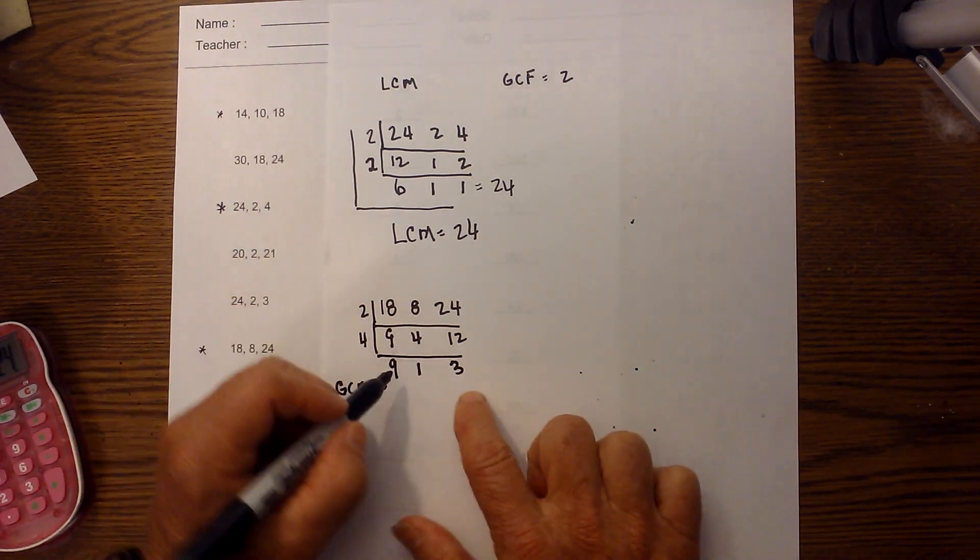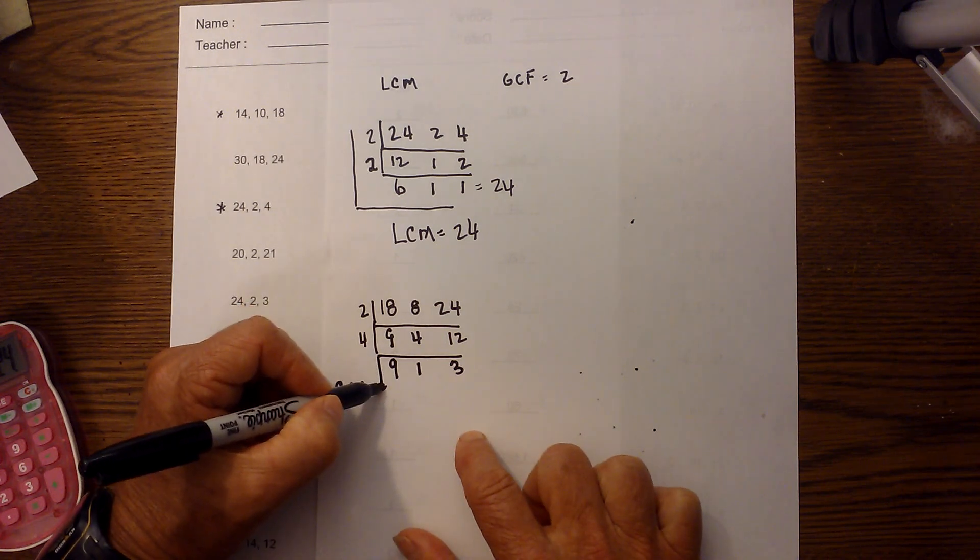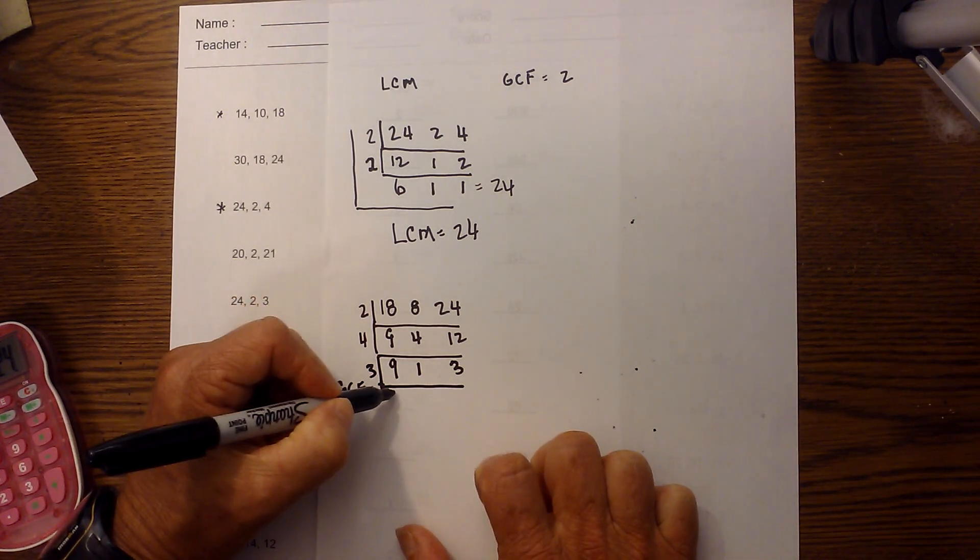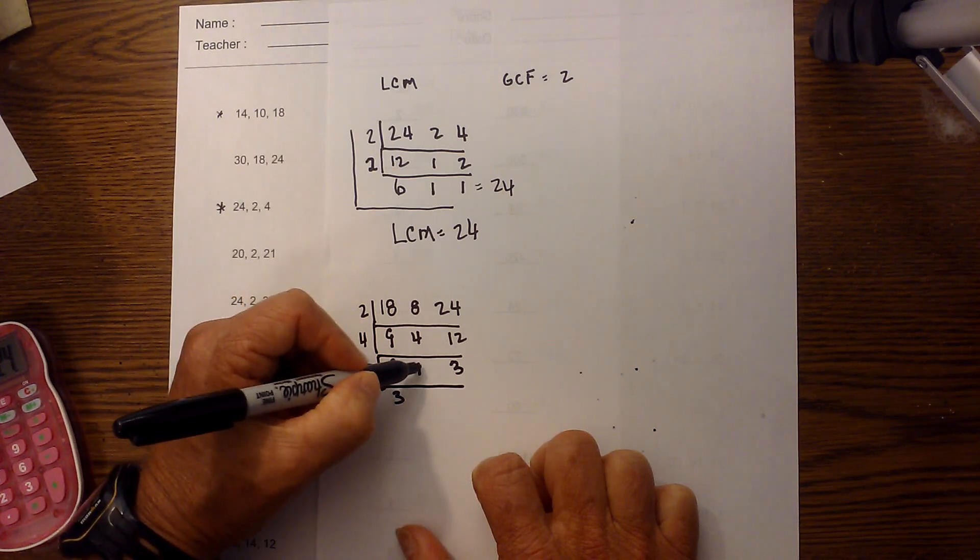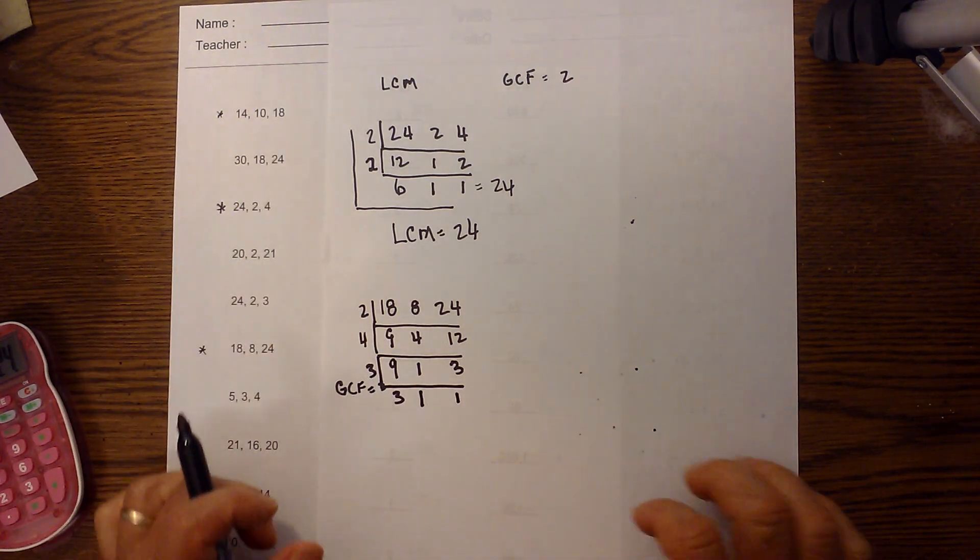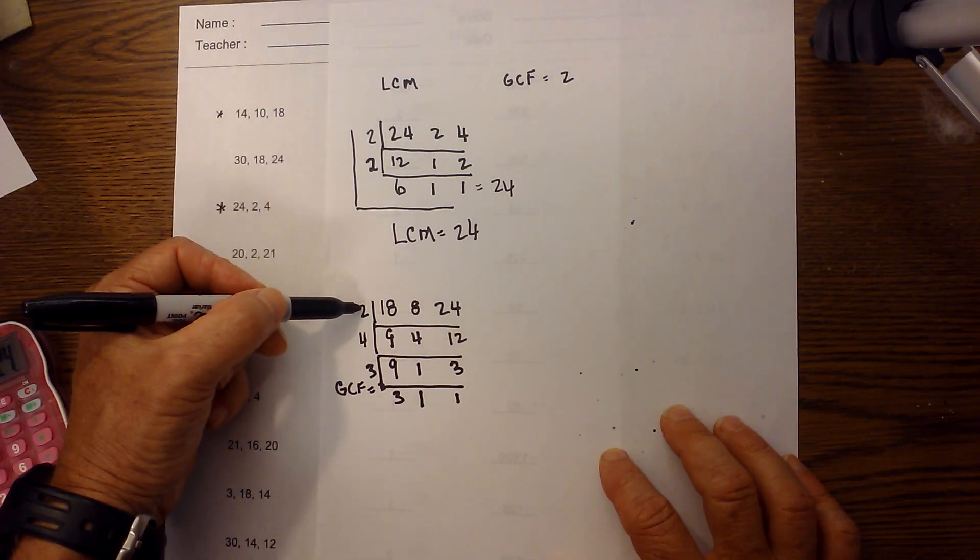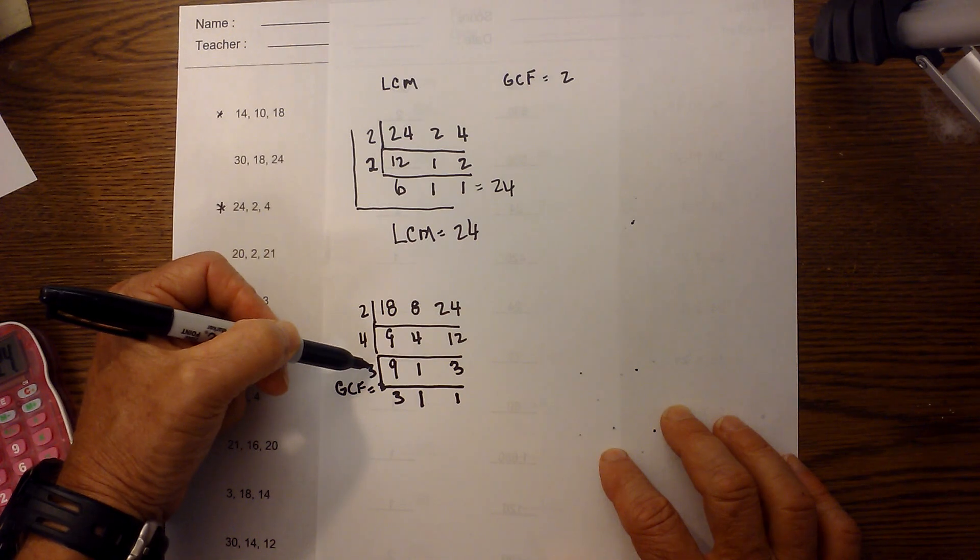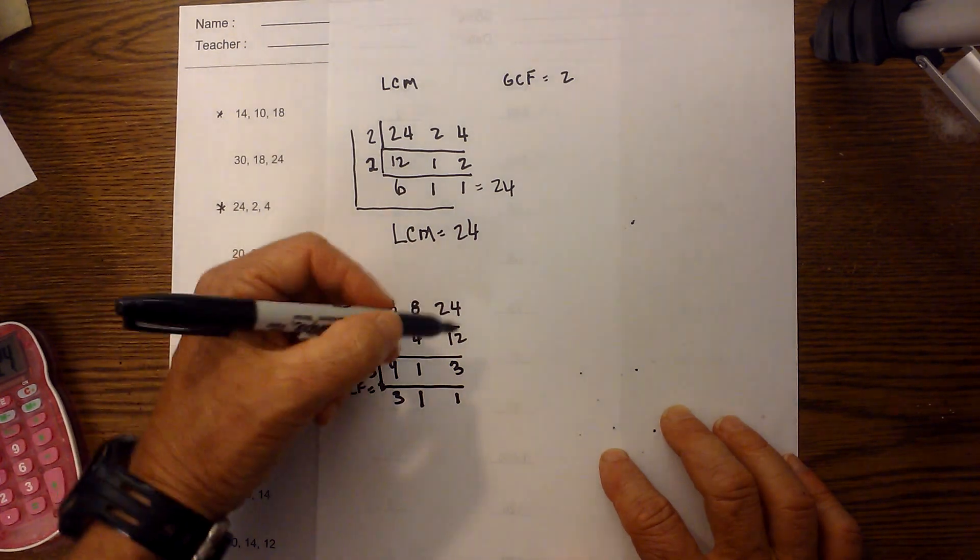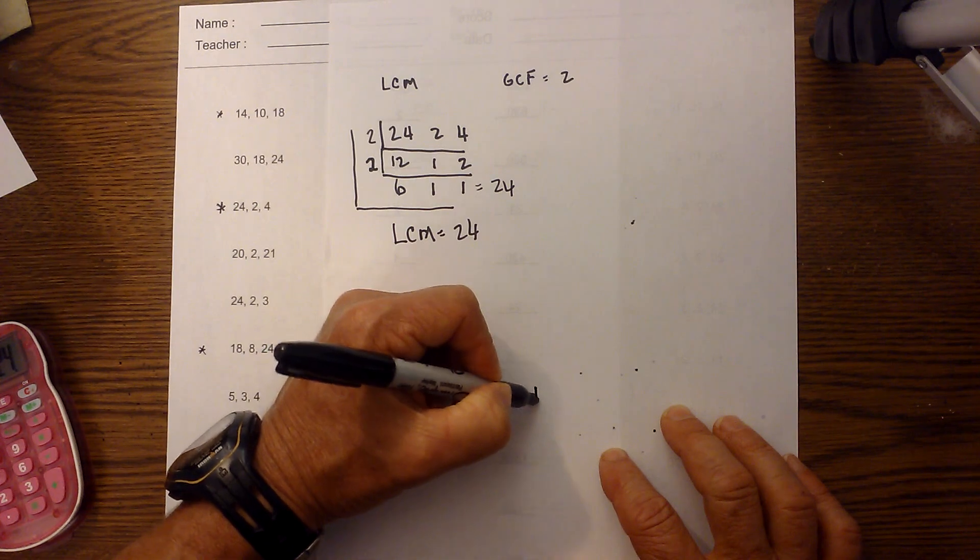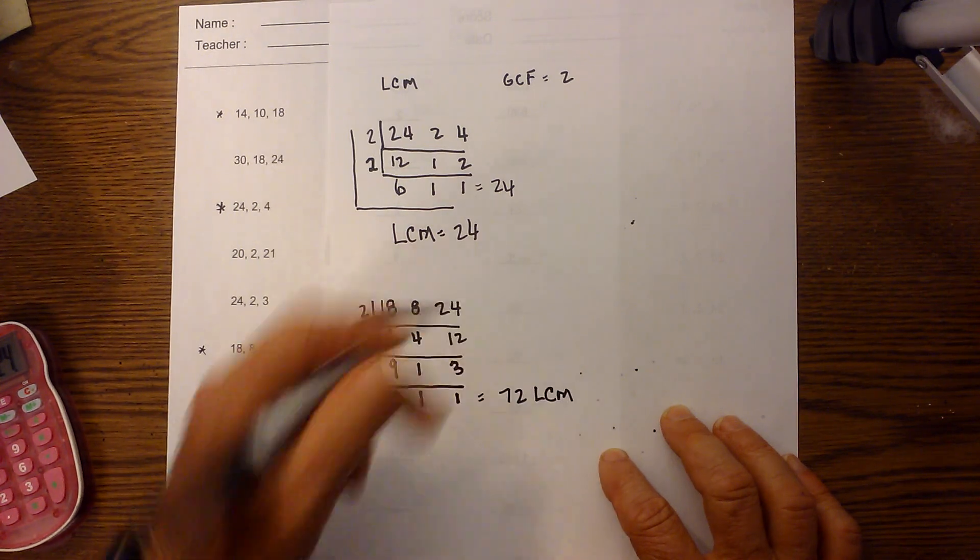Now I have another pair. 3 will go into 9 three times, 3 will not go into 1 so I'll bring it down, and 3 goes into 3 one time. At this time I am finished. I now multiply: 2 times 4 which is 8, 8 times 3 which is 24, and 24 times 3 is equal to 72, so 72 is the LCM.